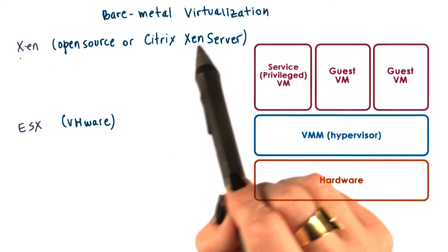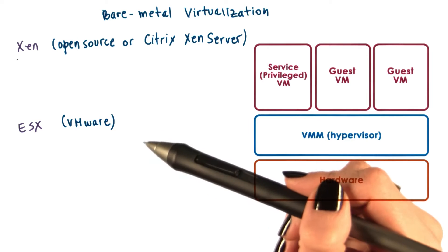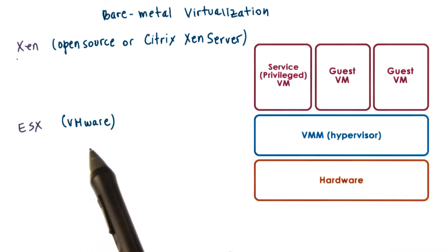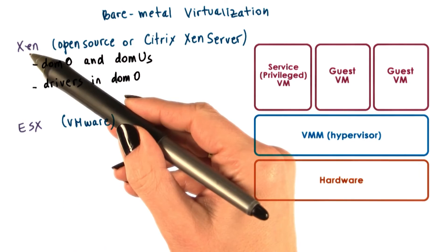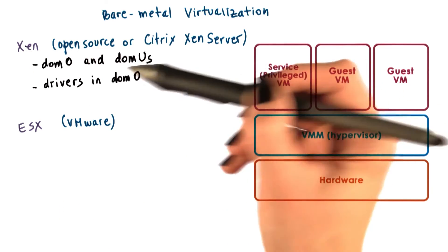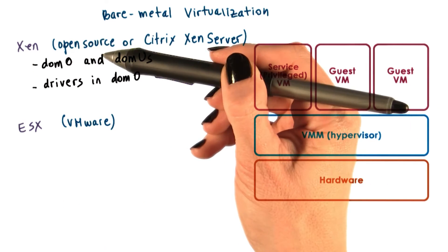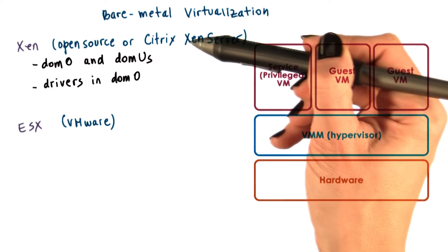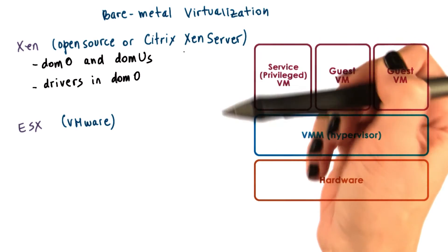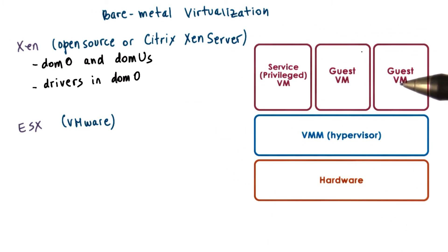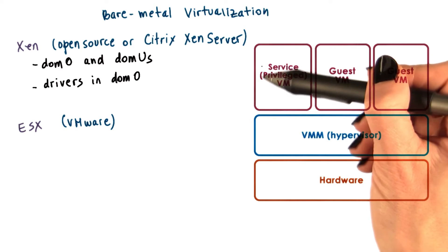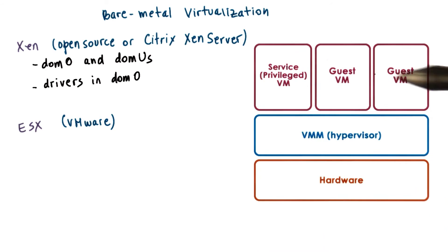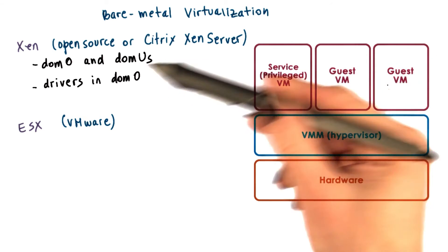This model is adopted by the Xen virtualization solution and also by VMware's ESX hypervisor. Regarding Xen — both the open source version and the version supported by Citrix, the Xen Server — the VMs that run in the virtualized environment are referred to as domains. The privileged domain is called DOM zero, and the guest VMs are referred to as DOM Us.